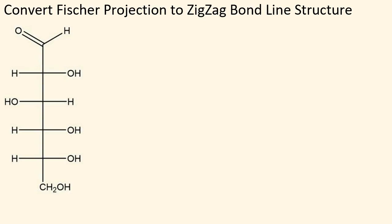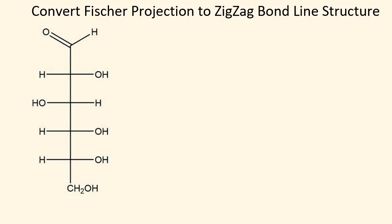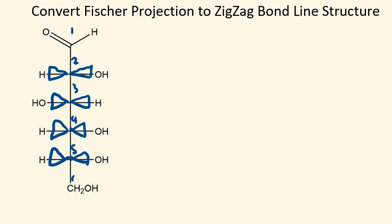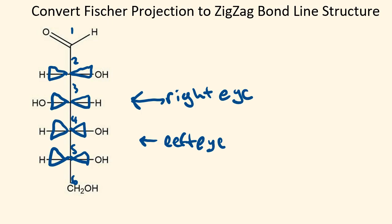To convert a Fischer projection to a zigzag bond line structure, remember that a Fischer projection is a completely eclipsed structure — all of the side groups are on wedges. The molecule is almost a pseudo ring, so if we number the carbons one through six and imagine standing on the screen looking at the molecule with our left eye and right eye positioned here, this is what we would see.